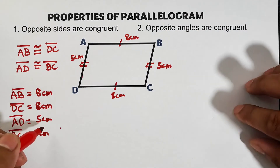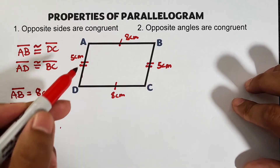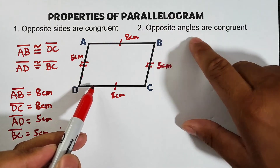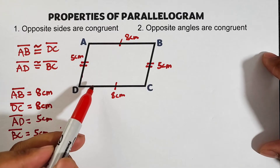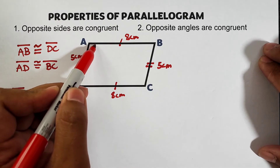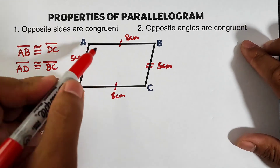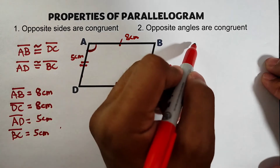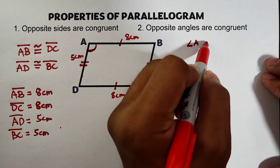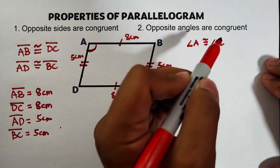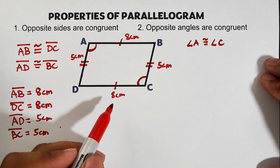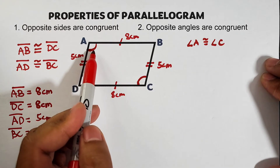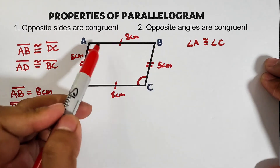The second property: opposite angles are congruent. In parallelogram ABCD we have four angles: angle A, angle B, angle C, and angle D. The first pair of opposite angles is angle A and angle C. Since they are congruent, we use the same arc symbol. In symbols, angle A is congruent to angle C. These angles can also be named using three letters, as long as the vertex letter is in the middle.